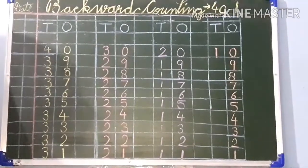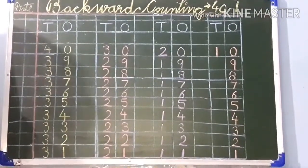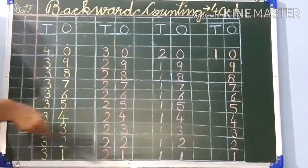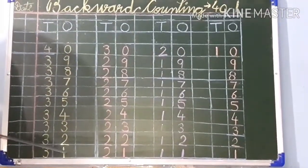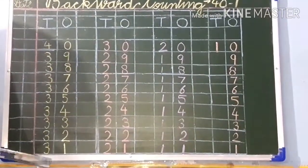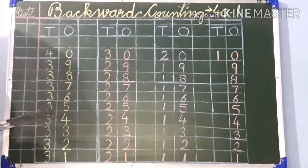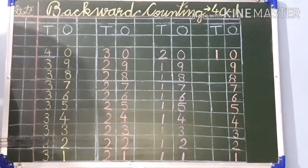So children we have completed our backward counting 40 to 1 here. Now after completing your work you have to draw a finishing line here as I have drawn here. Now you will revise this counting in orals also and in written also. And all the work you have to do in your notebooks very neatly. Thank you. Bye-bye.